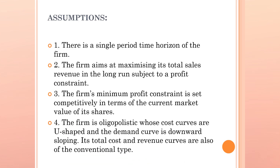This theory is based on certain assumptions. First, there is a single period time horizon of the firm. Second, the firm aims at maximizing its total sales revenue in the long run subject to a profit constraint. The firm's minimum profit constraint is set competitively in terms of the current market value of its shares. The last assumption: the firm is oligopolistic whose cost curves are U-shaped and the demand curve is downward sloping. Its total cost and revenue curves are also of the conventional type.